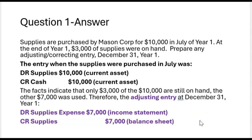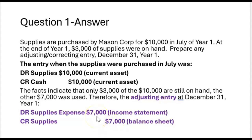What accounts have to be brought up to date? Well, certainly the supplies asset is no longer $10,000 — it's now only $3,000. So we have to reduce it by $7,000. And then the supplies expense of $7,000 needs to be recognized on the income statement because the current asset supplies has turned into an expense — at least $7,000 of the supplies has. The other $3,000 is still an asset. The journal entry needed is a debit to supplies expense and a credit to supplies. Notice that all adjusting entries include one income statement account and one balance sheet account.